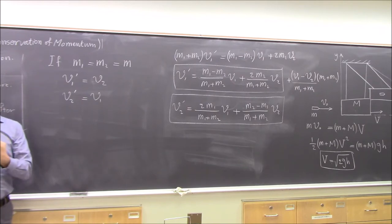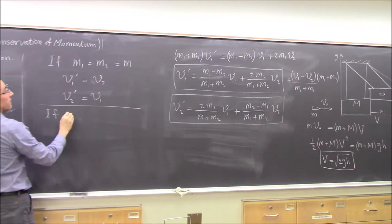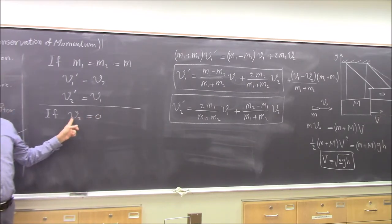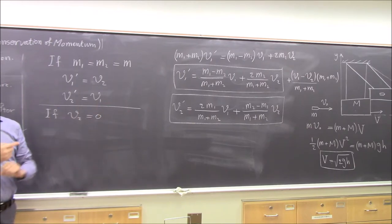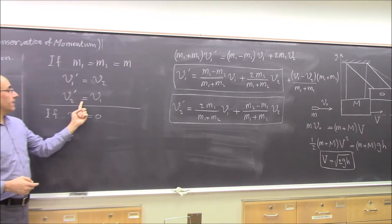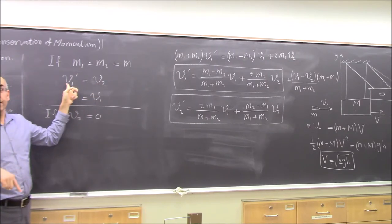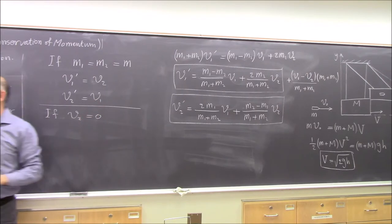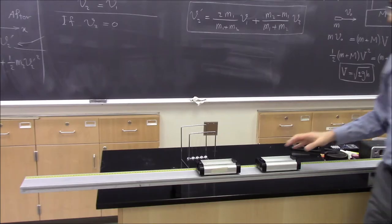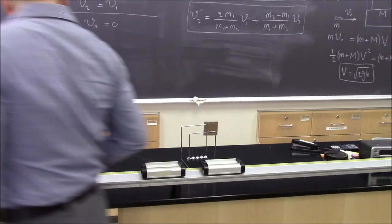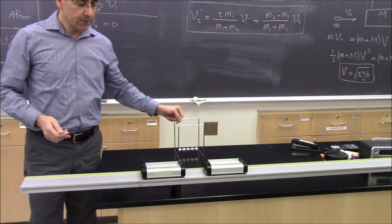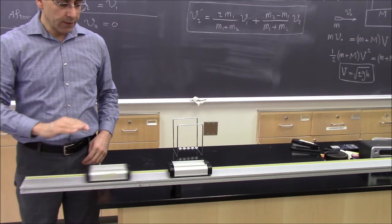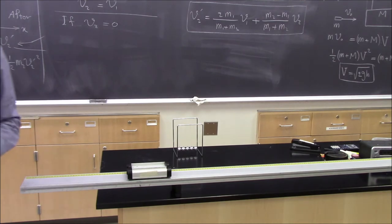Now especially, what happens if V2 is zero — meaning the second object is initially at rest? When the first one comes and hits the stationary second one, V1 prime becomes zero and V2 prime becomes V, the initial speed of the first. The first one stops completely and the second one moves off with the original speed. You can see this principle in action with the cards demonstration.